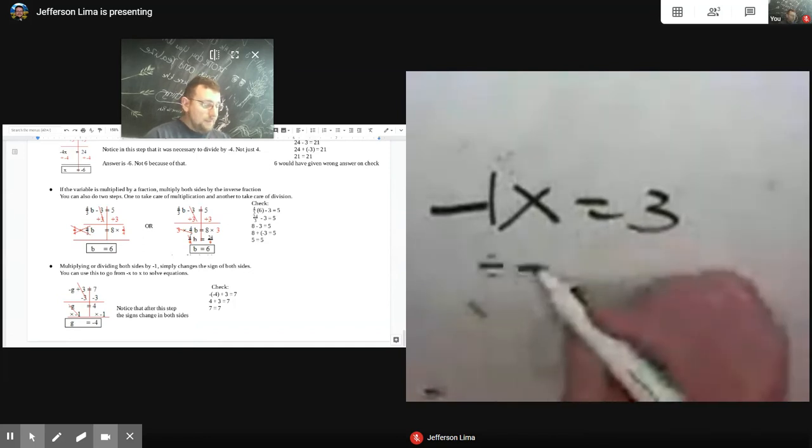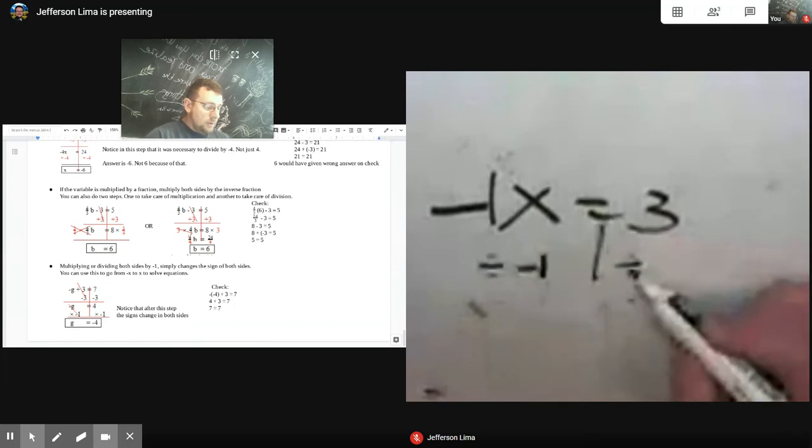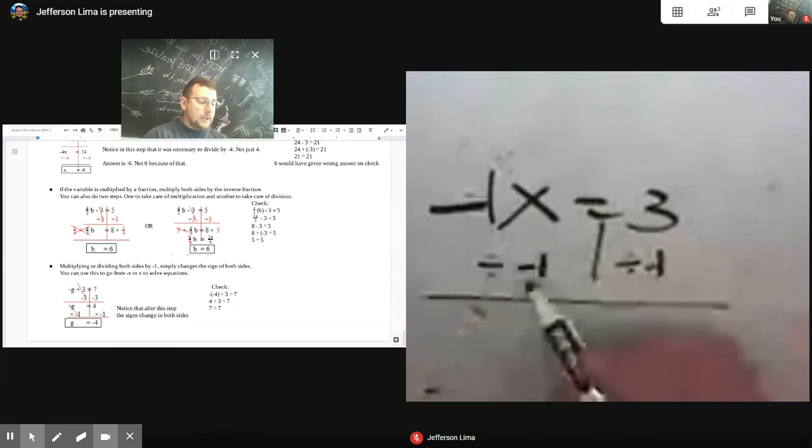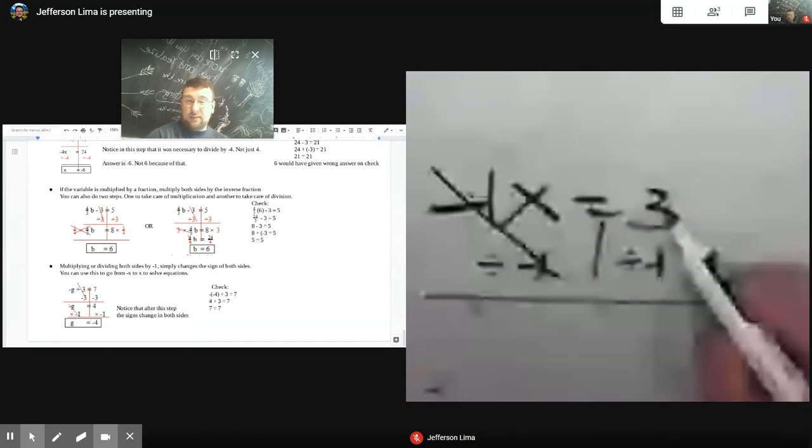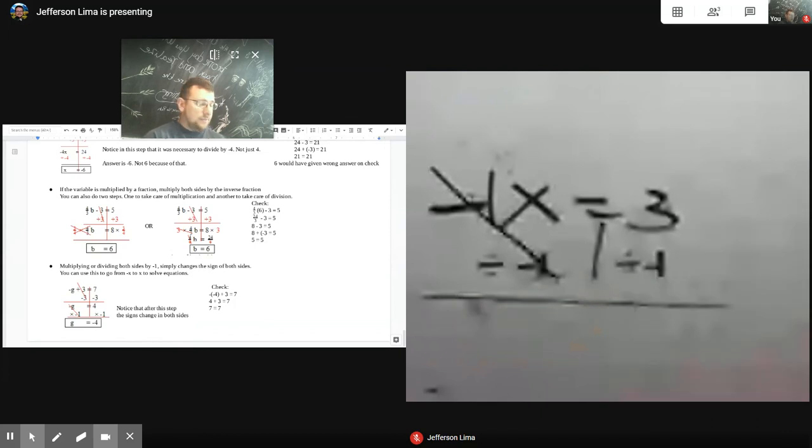So if you divide both sides by negative 1, what will happen? Well, negative 1 divided by negative 1 cancels out the negative 1. And 3 divided by negative 1 is just negative 3. So your final answer will be x equals negative 3.